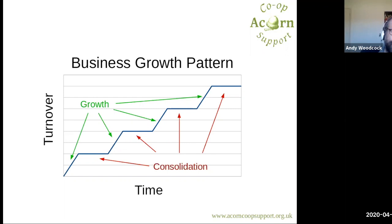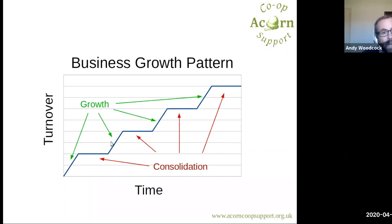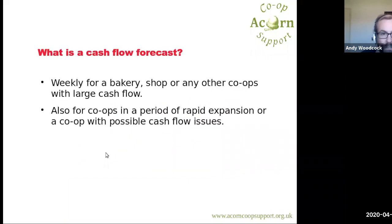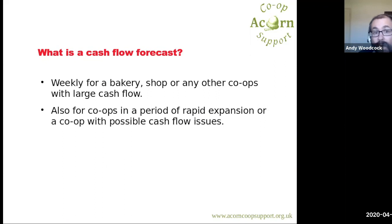This is a graph of the classic business growth pattern that business textbooks describe — theoretically, you have periods of growth followed by periods of consolidation. In these periods of growth, you are at a higher risk of running out of cash, so you should spend more time looking at your cash flow. So if you are a co-op with a large cash flow, a bakery or a shop, you want to be doing a weekly cash flow forecast. If you're a co-op in rapid expansion or with possible cash flow issues — most co-ops right now — you should be doing a weekly forecast.